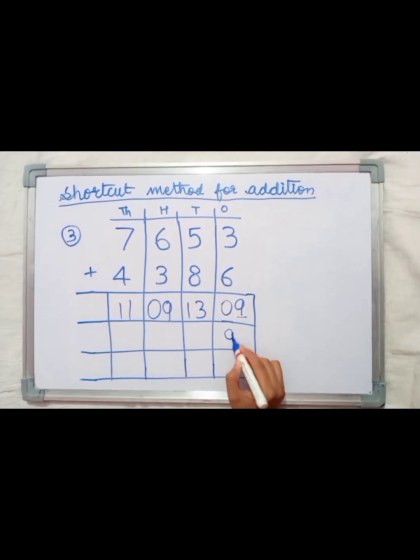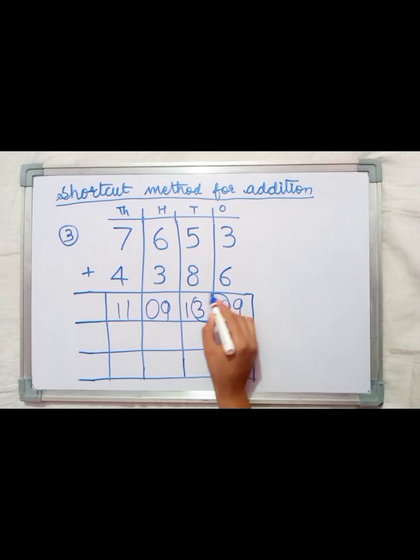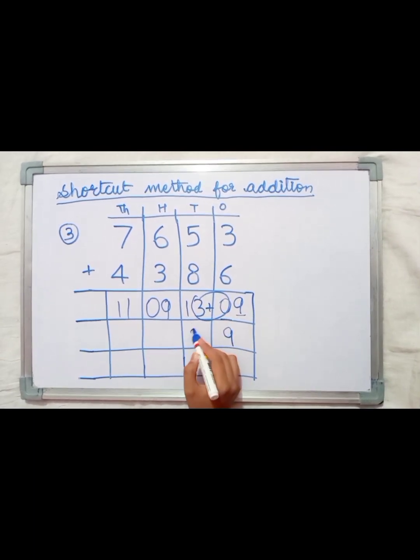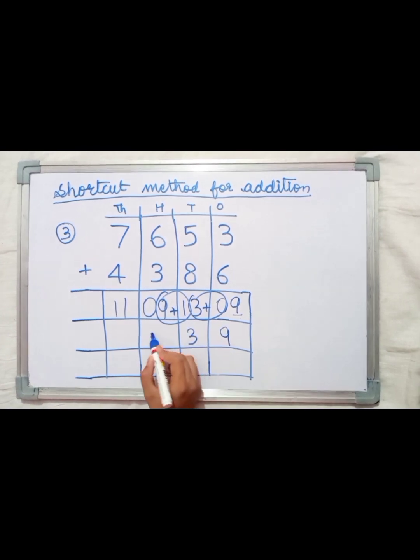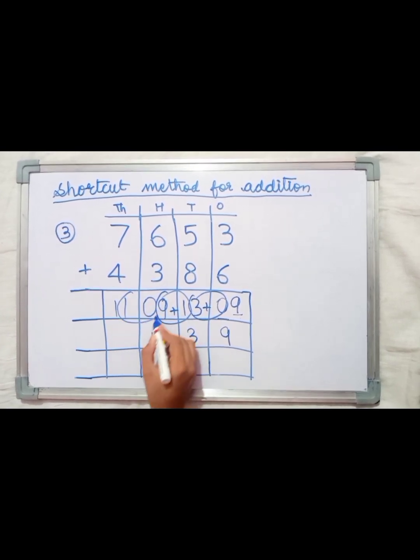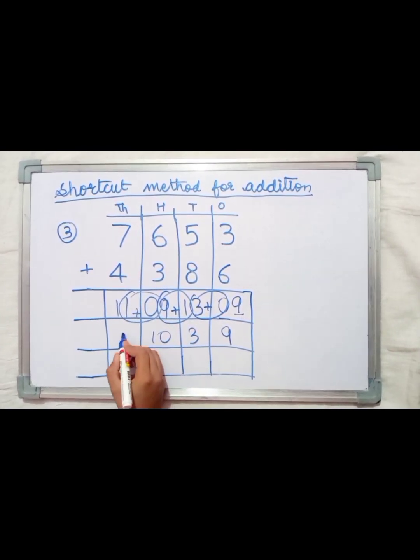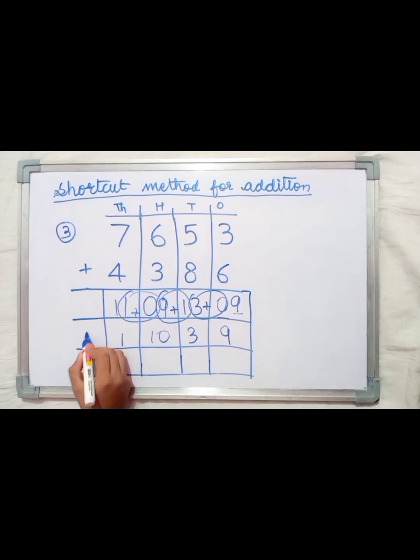Write 9 as is. 0 plus 3 equals 3. 9 plus 1 equals 10. 0 plus 1 equals 1. Write 1 as is.